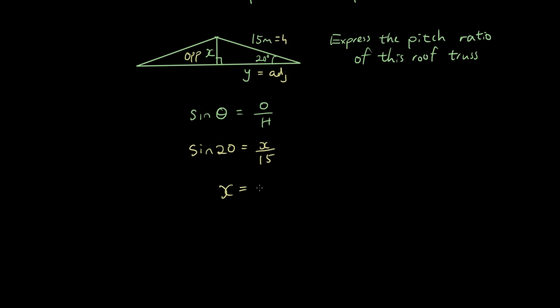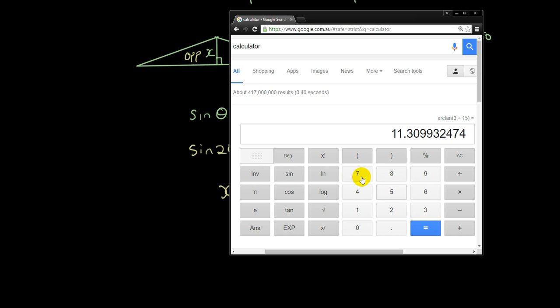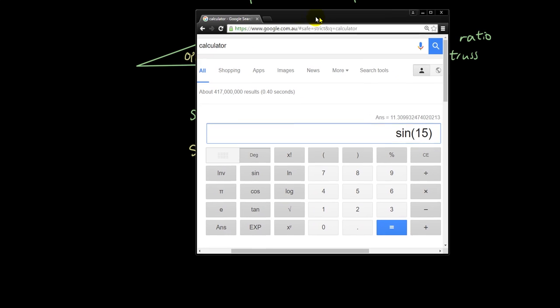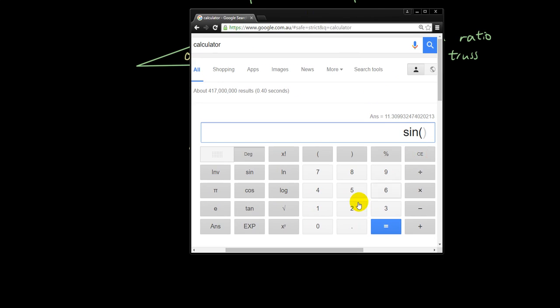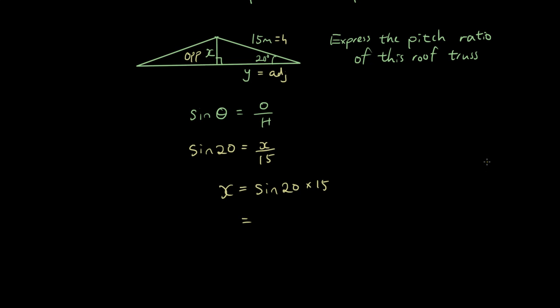Then we have sin 20 equals x over 15. Rearranging that, putting x as the subject, x equals sin 20 times 15. Put that into the calculator: sin 20 times 15, and the answer is 5.13 meters.